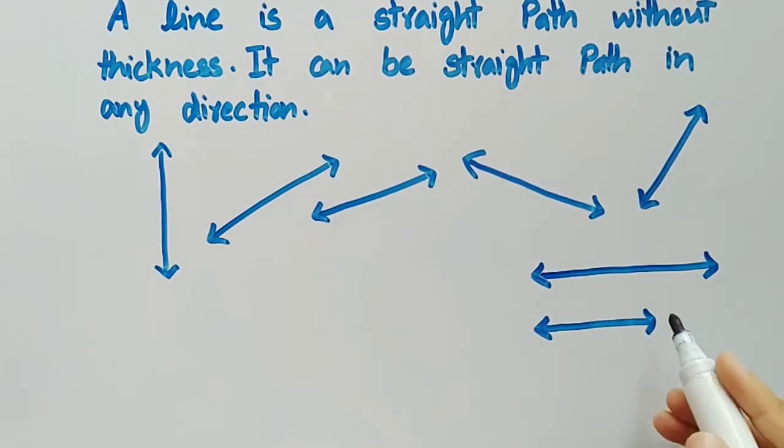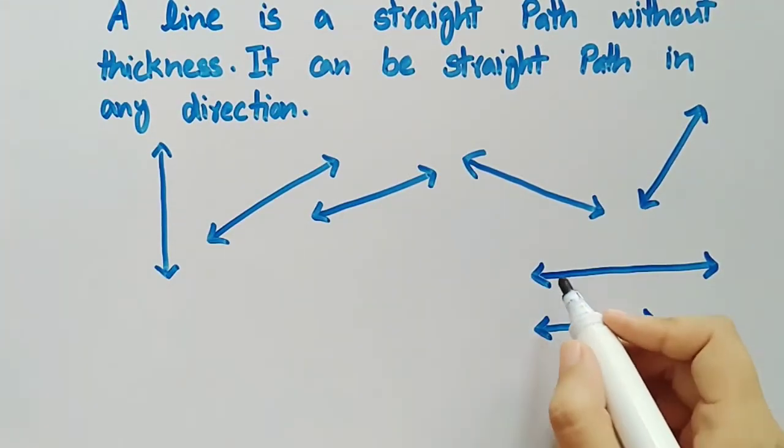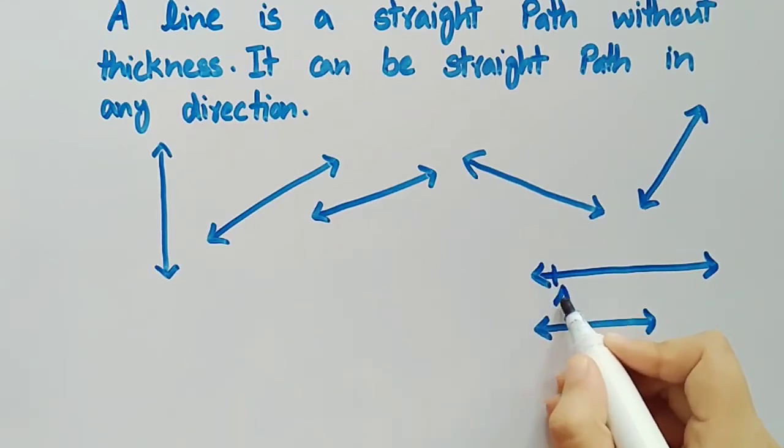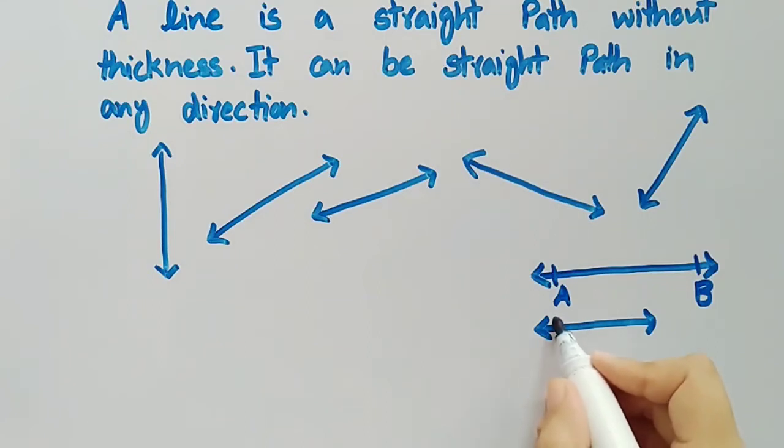Let's consider these two lines. Let's name one end of this line as A and the other end as B. And let's name the one end of this line as P and the other end as Q.